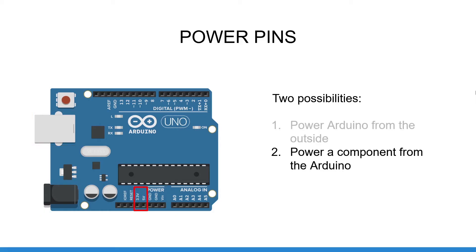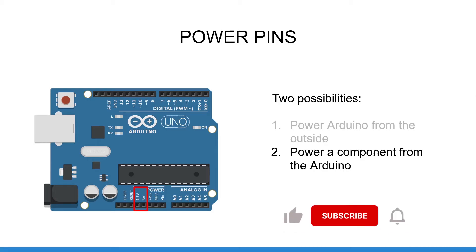For the second possibility, whenever you connect an external component to your Arduino Uno board, you need to connect it first to the ground, then you can use the 3.3 volt and the 5 volt power pins to power the component you want. Make sure to use the correct voltage — to know which voltage to use, simply refer to the datasheet of the external hardware component.